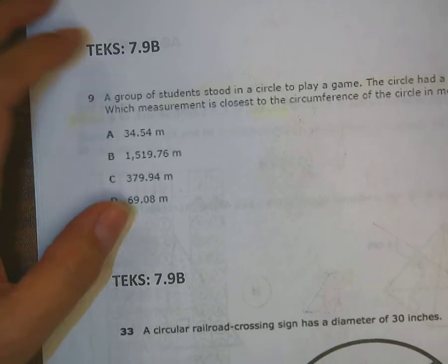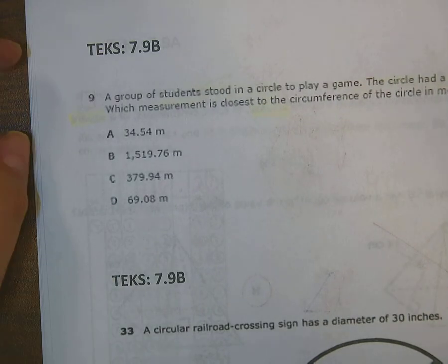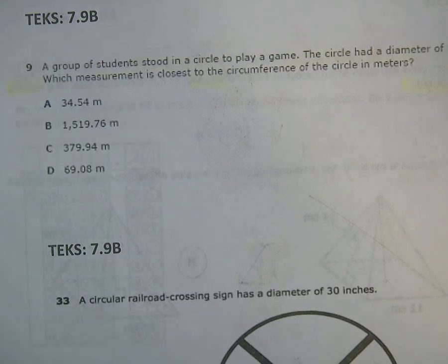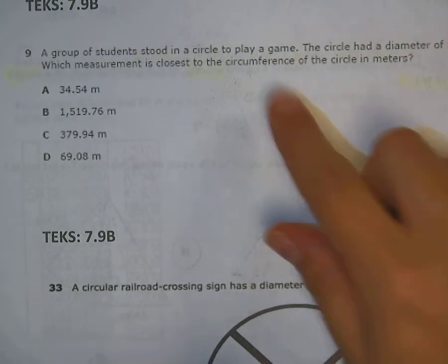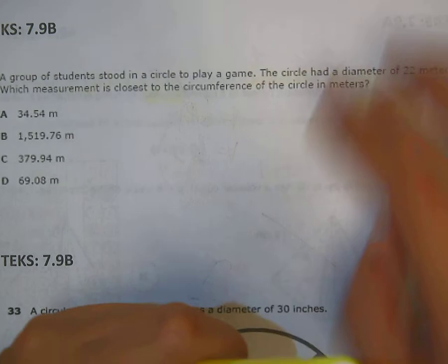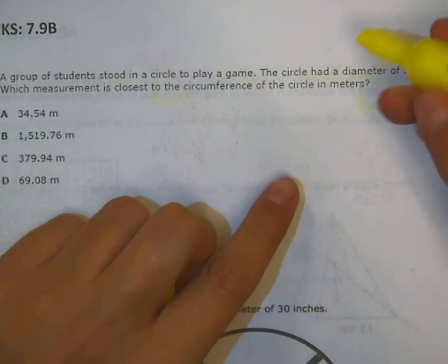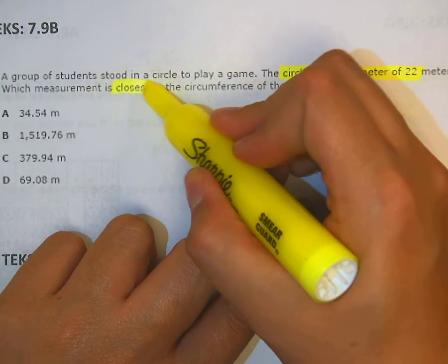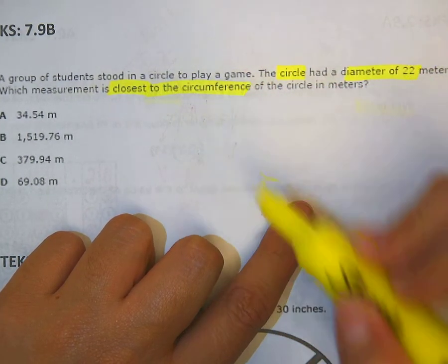A group of students stood in a circle to play a game. Nobody really cares. The circle has a diameter of 22 meters. Which measurement is closest to the circumference of the circle in meters? I read this again. It says circle, diameter of 22, closest to the circumference.